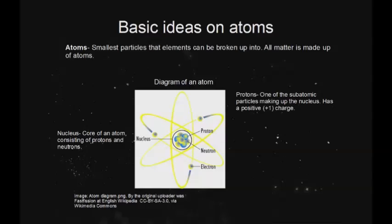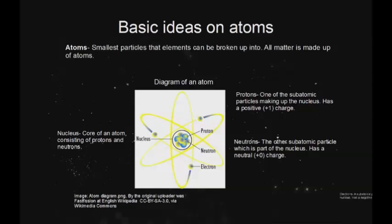Protons are one of the two subatomic particles making up the nucleus, and they have a plus one charge. Neutrons are the other type of subatomic particle found in the nucleus, and they have a neutral charge. Electrons are subatomic particles which orbit the nucleus, and they have a negative one charge.